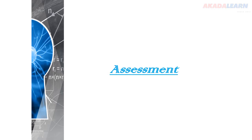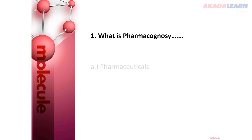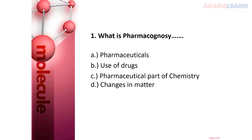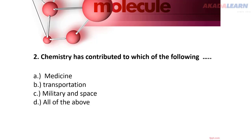Let's now take some assessments to see how far you have learned. Question 1: What is pharmacognosy? A. Pharmaceuticals. B. Use of drugs. C. Pharmaceutical part of chemistry. D. Changes in matter. Question 2: Chemistry has contributed to which of the following? A. Medicine. B. Transportation. C. Military and space. D. All of the above.